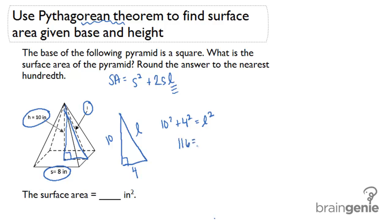We would get 116 equals L squared, and L would equal the square root of 116. Again, 116 is not a perfect square, so we'll approximate our answer at 10.77. So our slant height is 10.77 inches.